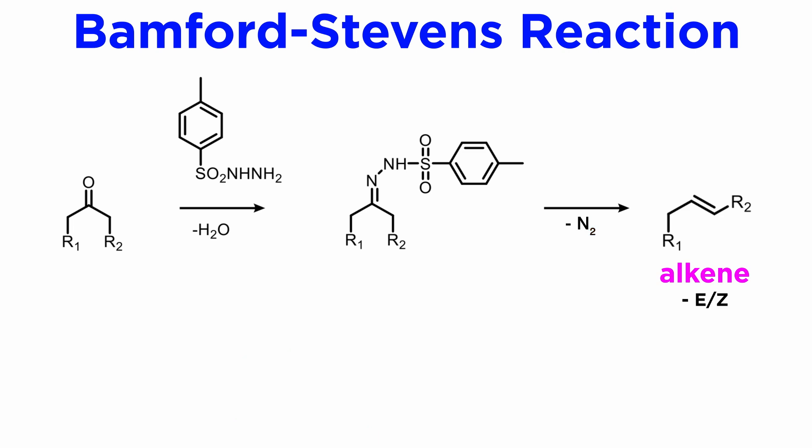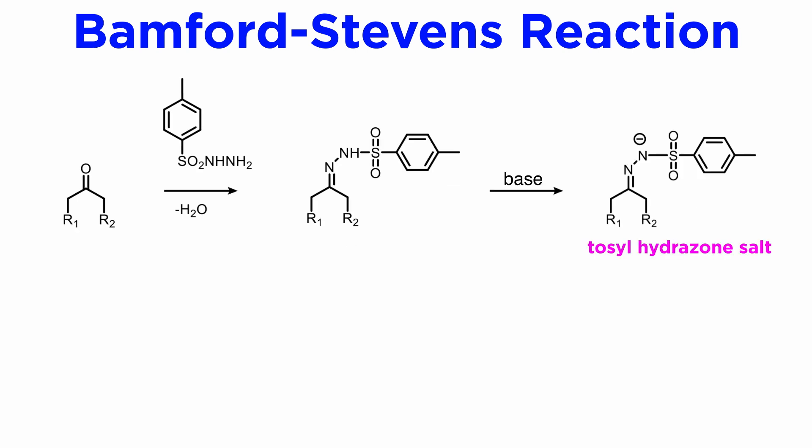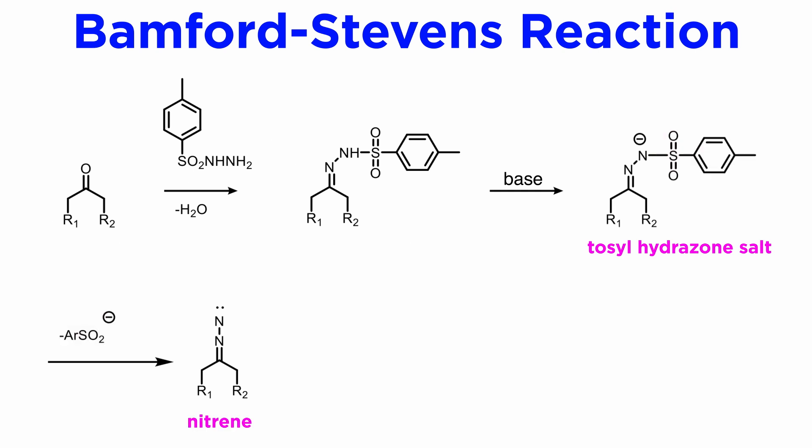The alkenes formed are, in principle, a mixture of E and Z isomers, and in addition, two possible regiochemistries are possible, so four products can be formed. The mechanism of this reaction is postulated to take two possible pathways. In the first, the tosyl hydrazone salt loses a good leaving group like sulfonate by thermal action, leading to what is formally a nitrene, in resonance with a dipolar form.